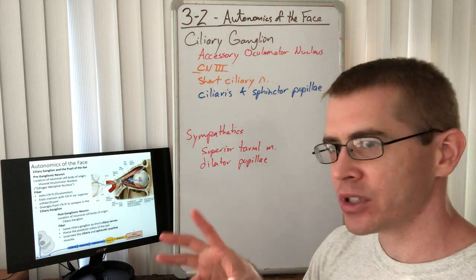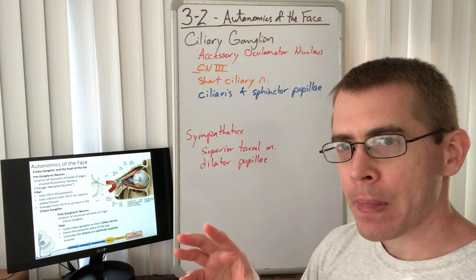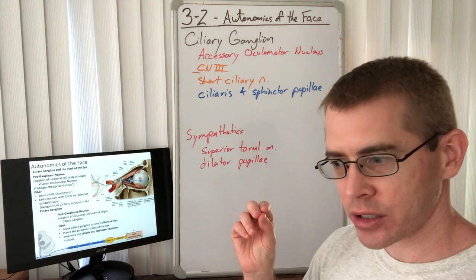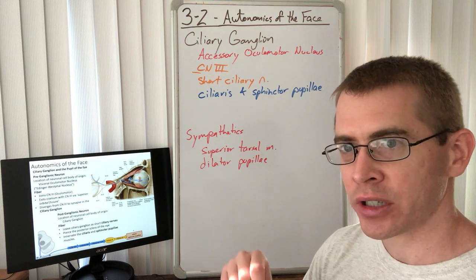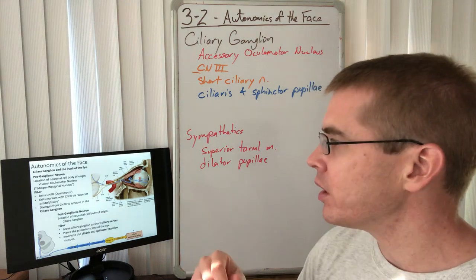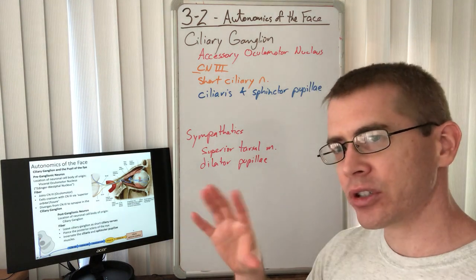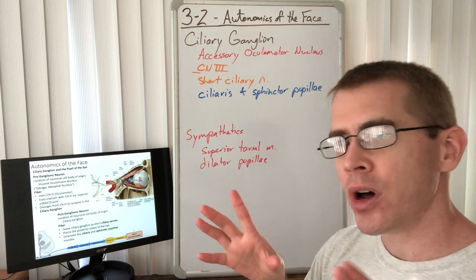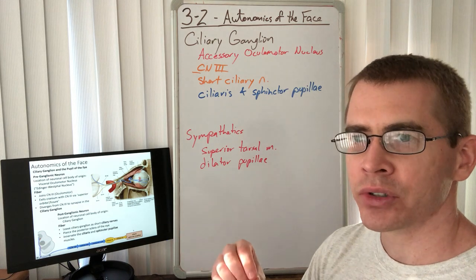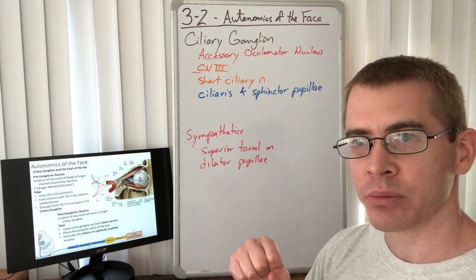The postganglionic fiber leaves the ciliary ganglion and travels with components of V1 — specifically the ciliary nerves, the long and short ciliary nerves, which travel through the ciliary ganglion. They hitch a ride along with them, pierce the sclera of the eye, and follow anteriorly past the ora serrata to innervate the muscles that cause accommodation, which is the ciliaris muscle.